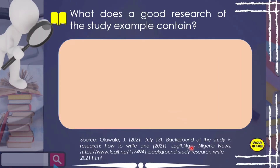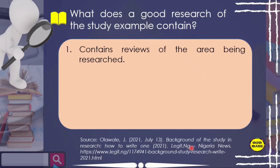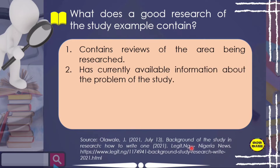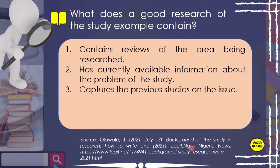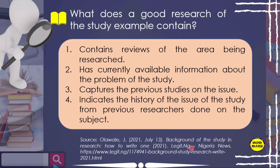So what does a good background of the study contain? Number one: it contains reviews of the area being researched. Number two: it has currently available information about the problem of the study. Number three: it captures the previous studies on the issue. Number four: it indicates the history of the issue from previous researchers done on the subject.